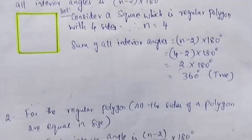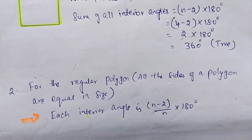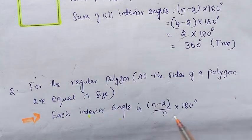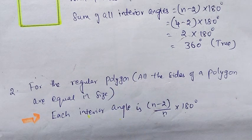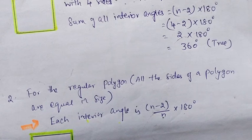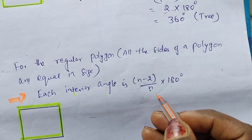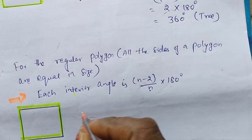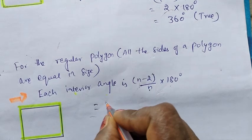Second sum: for a regular polygon, all the sides of the polygon are equal in size. Each interior angle is (n minus 2) by n into 180 degrees. We are going to verify this. Each interior angle equals (n minus 2) into 180 degrees. What is n?